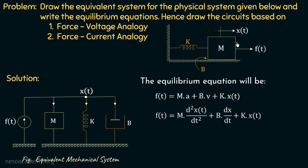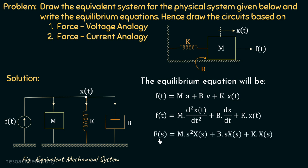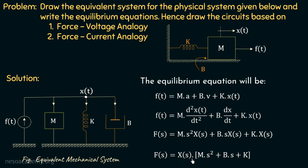This is the equilibrium equation for this mechanical system, written by converting the physical system into its equivalent mechanical system and applying the node equation. If we apply the Laplace transform on both sides, we get: F(s) = ms²X + bsX + kX. Taking X common from the three terms gives: F(s) = X(ms² + bs + k). This is the force equation for this mechanical system.